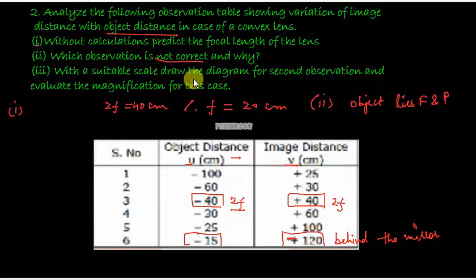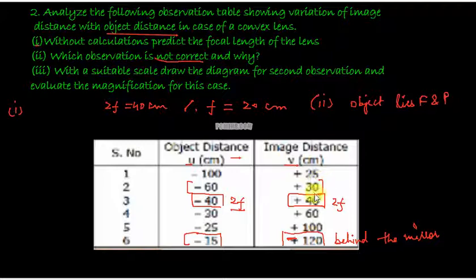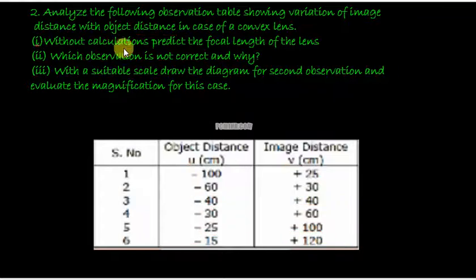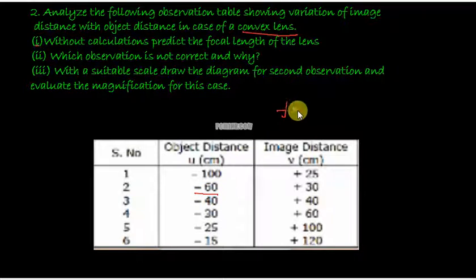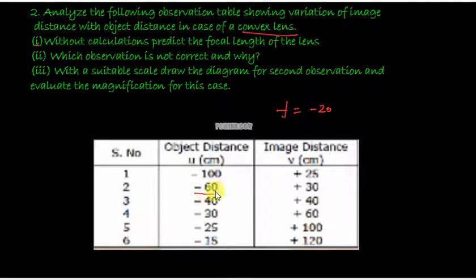Now, using a suitable scale, we draw the diagram for the second observation and evaluate the magnification. The second observation has object distance u equals minus 60 centimetres and image distance v equals plus 30 centimetres. The focal length was calculated to be 20 centimetres, so an object placed at minus 60 lies beyond 2f in front of the convex lens. We'll draw the ray diagram accordingly.